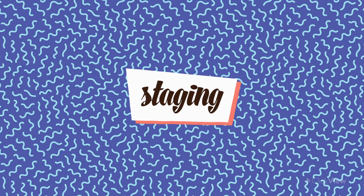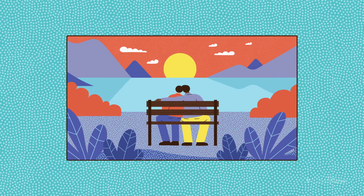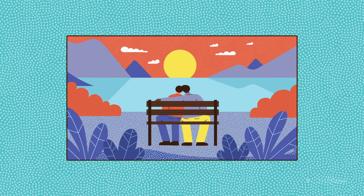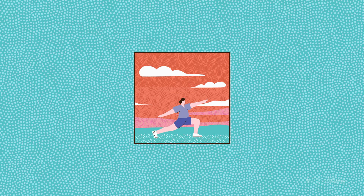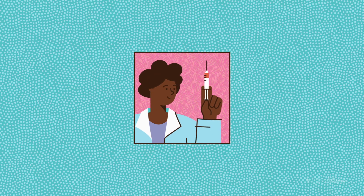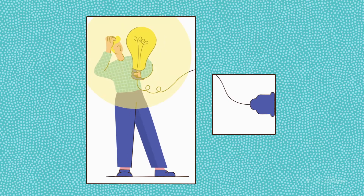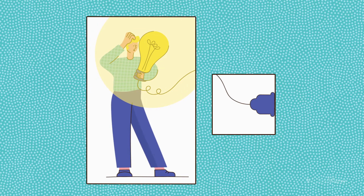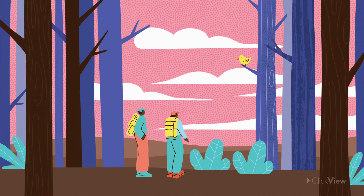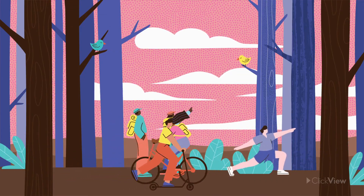Staging. This principle refers to the way that we present or frame an idea so it's easily understood by the audience. There are many ways we can apply staging to an animation — it can be through acting, setting, camera angle, timing, or any combination of these techniques. Animators also use staging to control where the audience is focused. An example of bad staging would be if too many things happen at once in a scene — we wouldn't know what to look at.